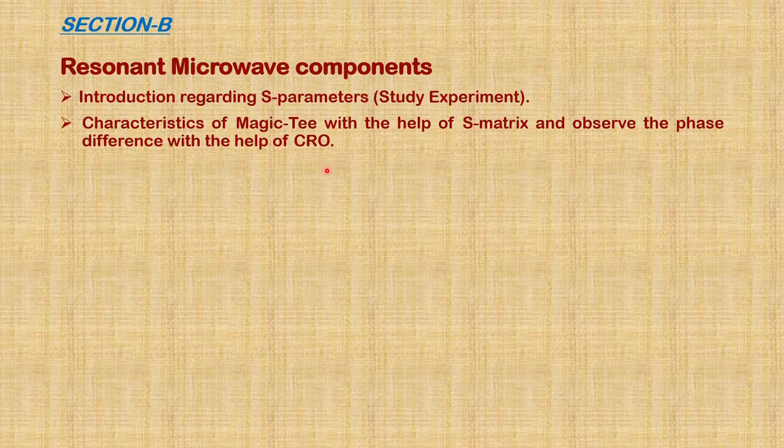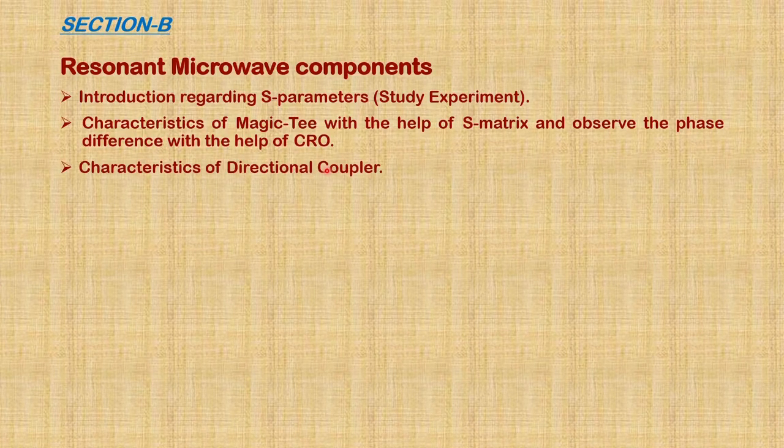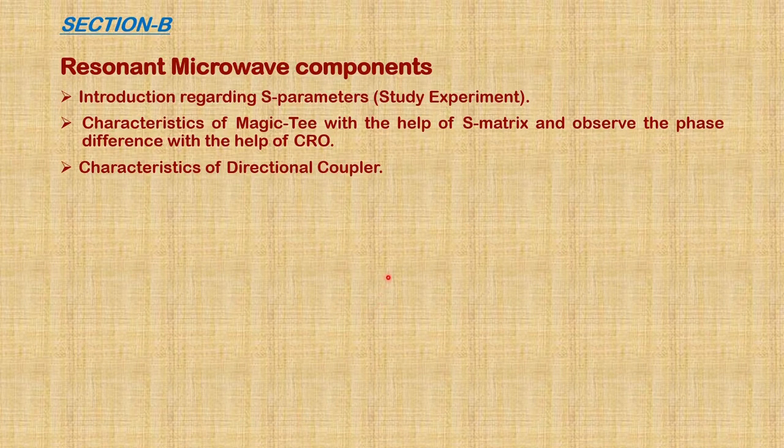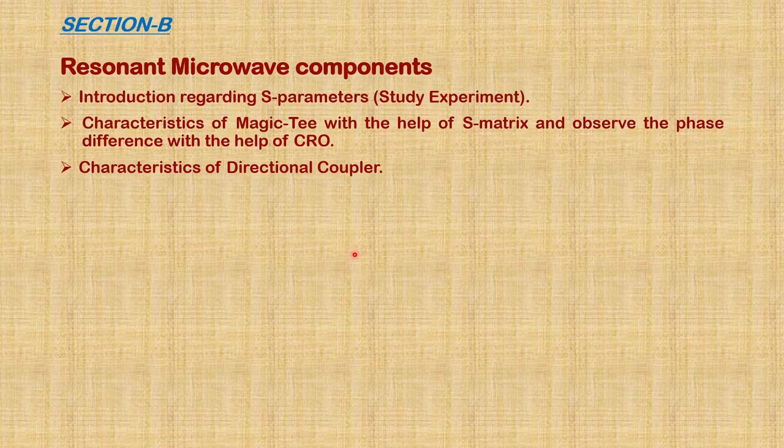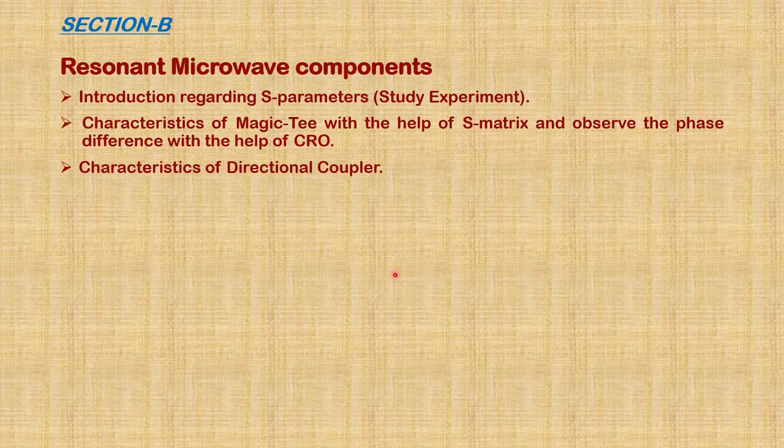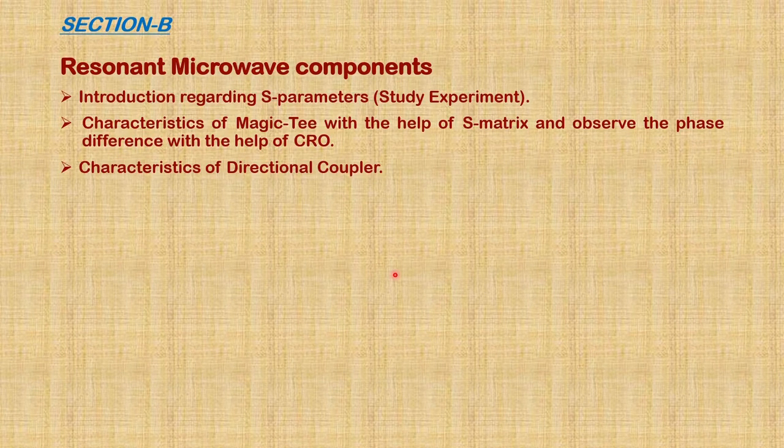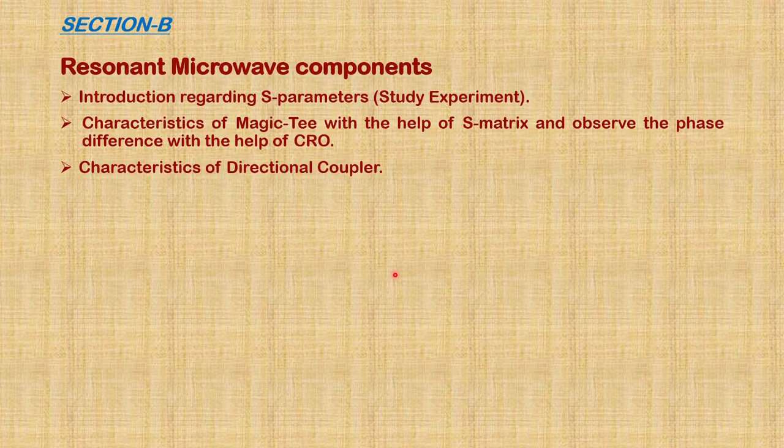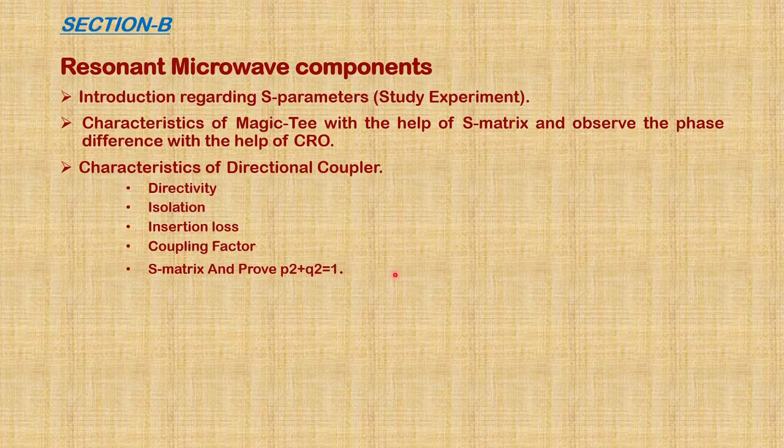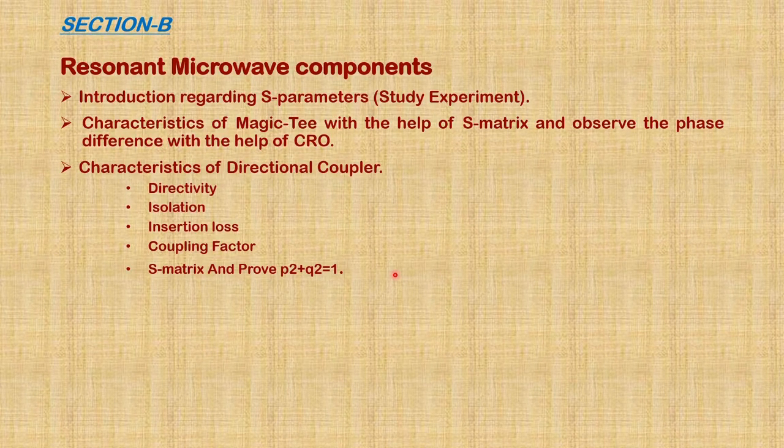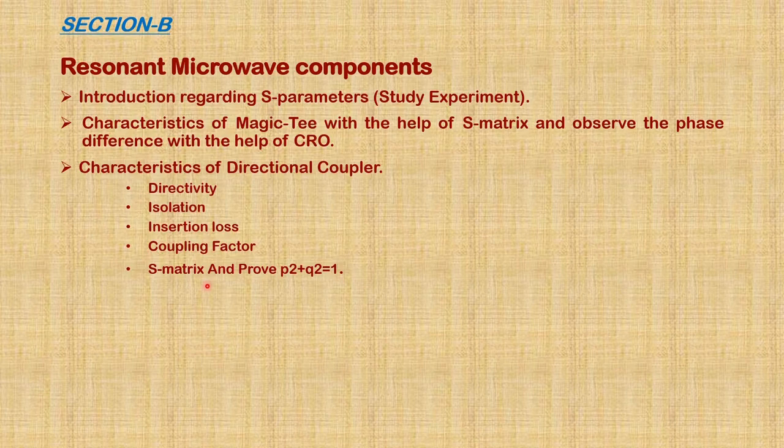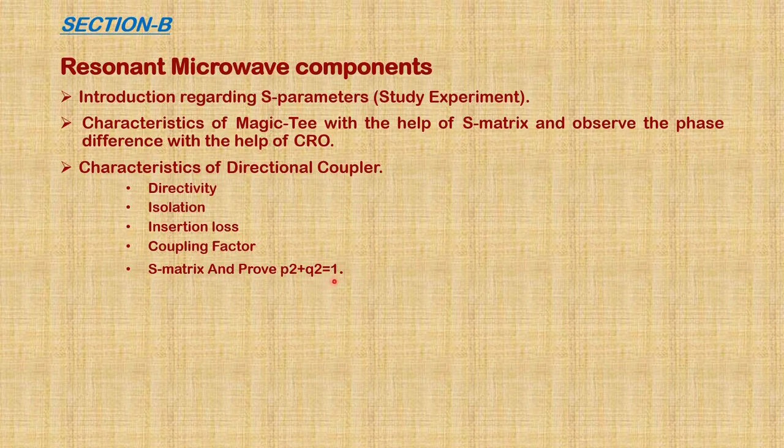Next experiment is the directional coupler. A directional coupler consists of two transmission lines: one is the main line and the second is the auxiliary line. These two lines are electromagnetically coupled. In general, directional couplers are mainly used to find power measurement of incident and reflected waves transmitted through the waveguide. We calculate directivity, isolation, insertion loss, and coupling factor. We represent these in S-matrix values and prove that P squared plus Q squared equals one.